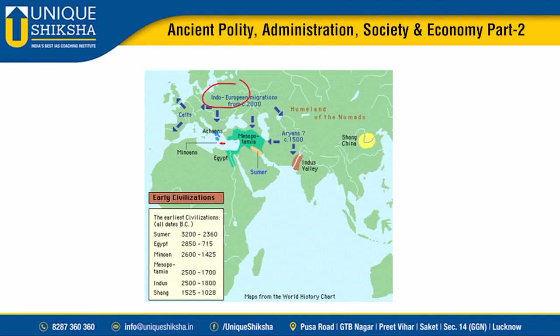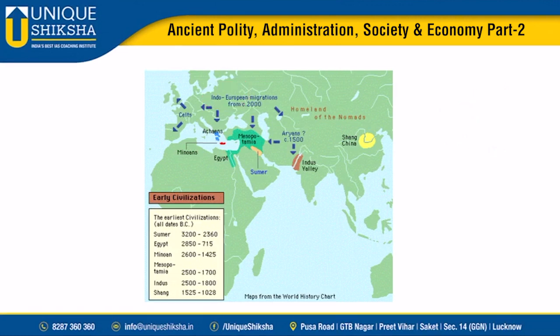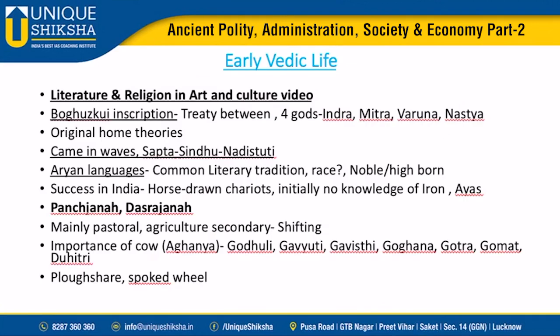That's why Indo-European languages are similar to ancient Indian Sanskrit. There is a common literary tradition - the ancient Iranian text Zend Avesta is an Aryan language text and there are quite a few similarities with the Rig Veda. Early Vedic life is distinguished by its literature.